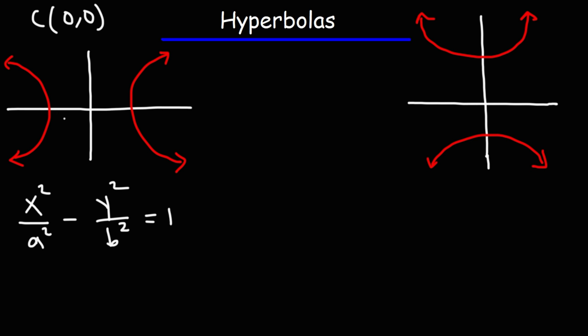A is the distance between the center of the hyperbola and the vertex. So to get the two vertices, the coordinates are plus or minus a comma zero for this type of hyperbola. The same is true for the other one — a is the distance between the vertex and the center of the hyperbola.